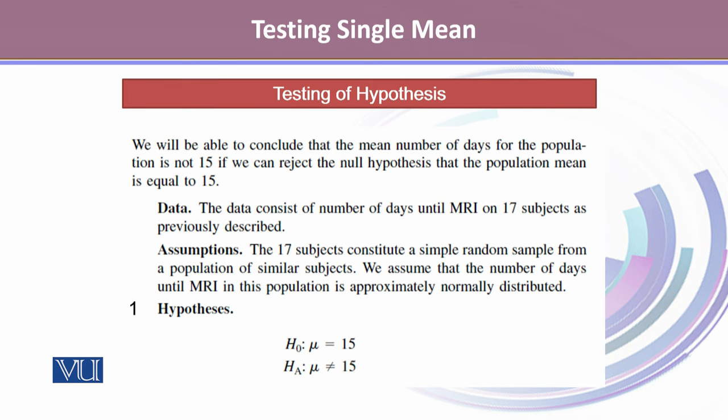The assumptions we will test are: the subjects constitute a simple random sample — randomness is confirmed from a population of similar subjects — and we assume the number of days until MRI in this population is approximately normally distributed. Our hypothesis states H0: mu equals 15, against the alternative hypothesis that mu is not equal to 15, which confirms this is a two-tailed test.